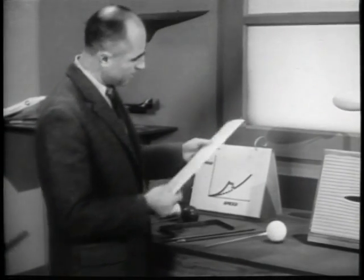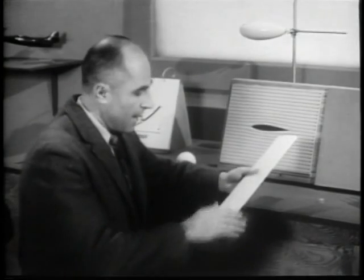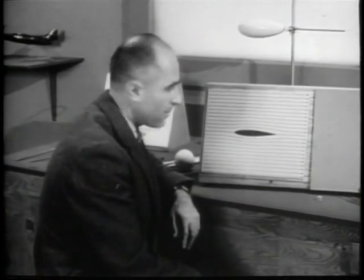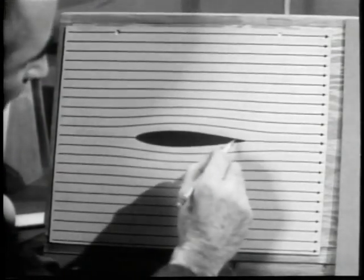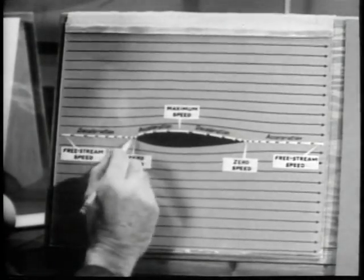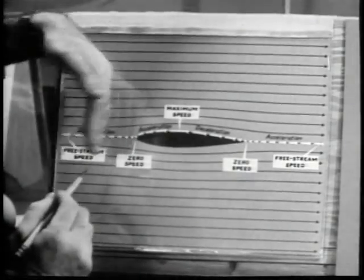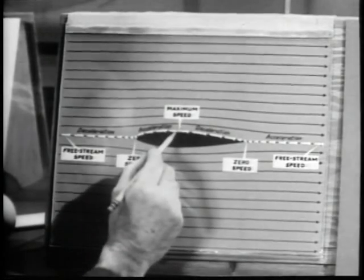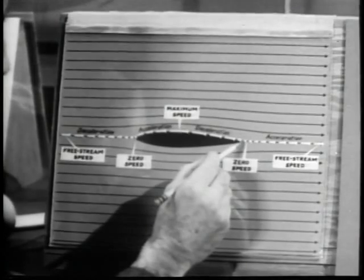Let us think about the flow past the streamlined airfoil. Suppose that the fluid has no viscosity at all and that it can slip past the surface. Then the particle trajectories — the streamlines — are as shown in this sketch. Consider the central streamline, which splits at the nose, runs around the airfoil, and rejoins at the tail. The particle speeds at different points along the streamline are proportional to the lengths of these arrows. Beginning with a free stream speed far upstream, a fluid particle decelerates to zero speed at the nose — a stagnation point. Then it accelerates to its maximum speed at about the position of maximum thickness of the airfoil, then decelerates to another stagnation point at the tail.